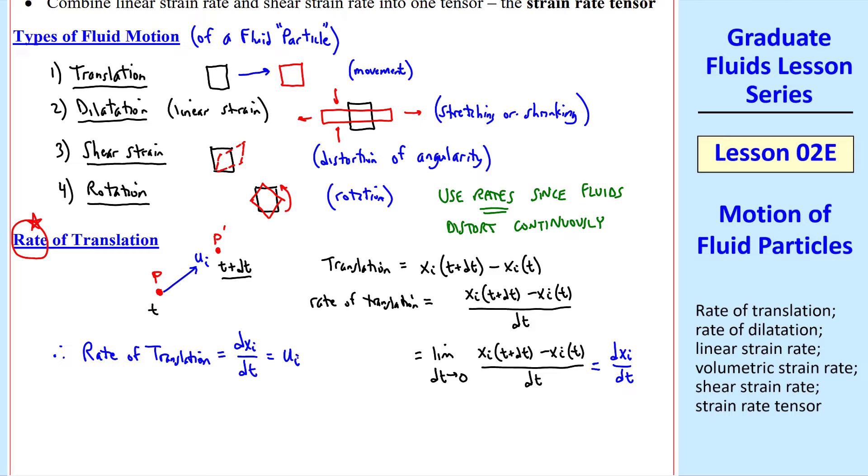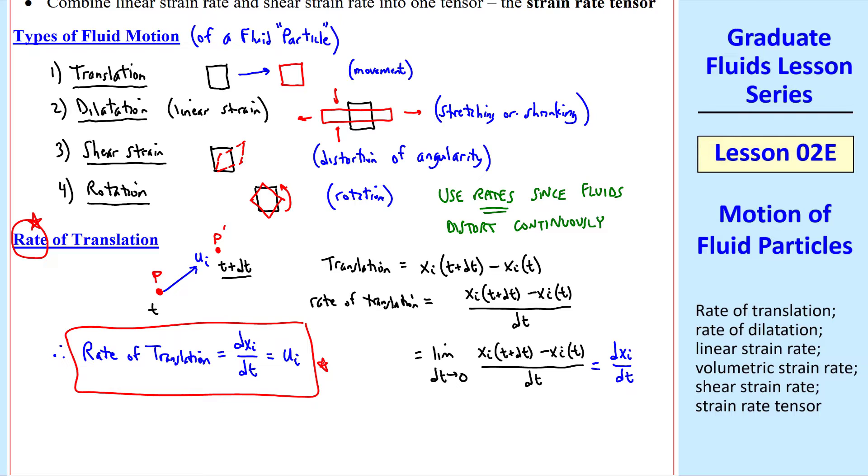Therefore the rate of translation is dxi dt, which is simply the velocity vector. That one's kind of obvious. The rate of translation is the velocity vector.